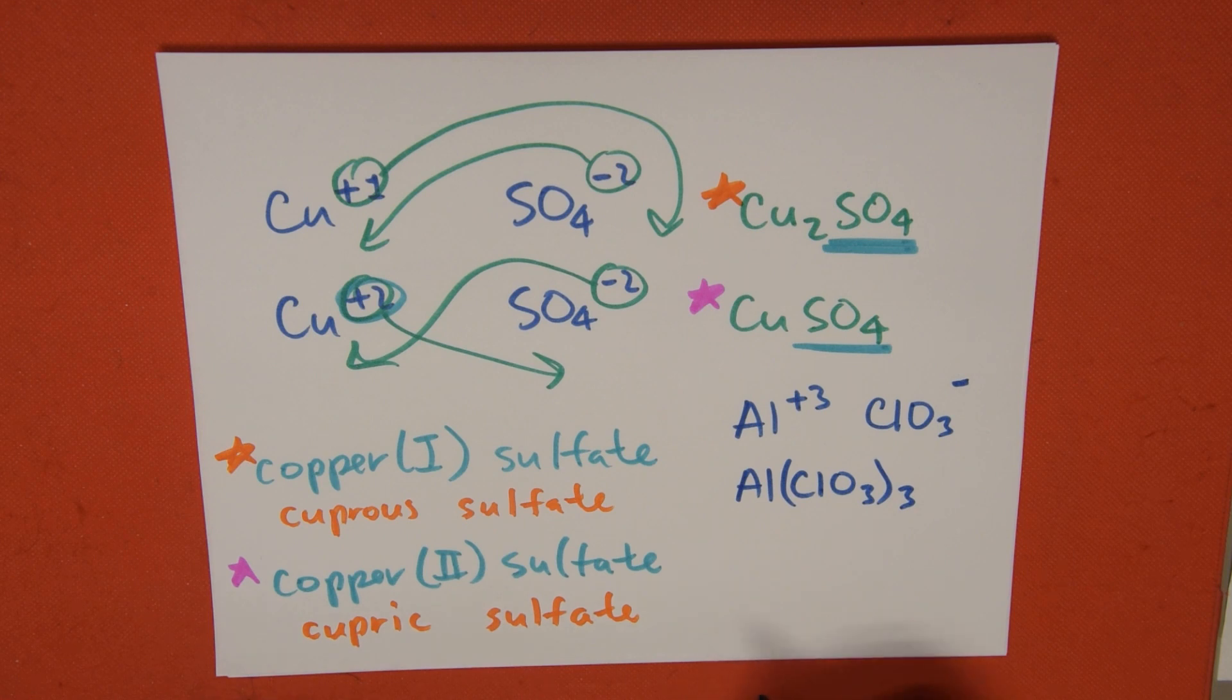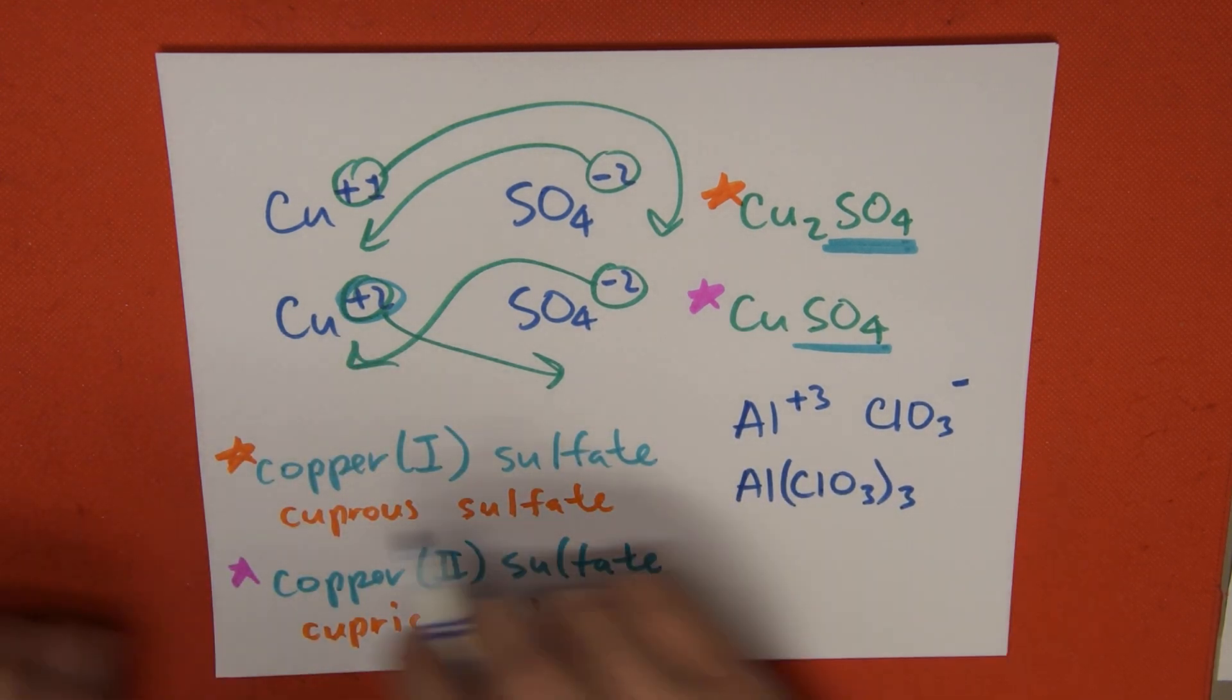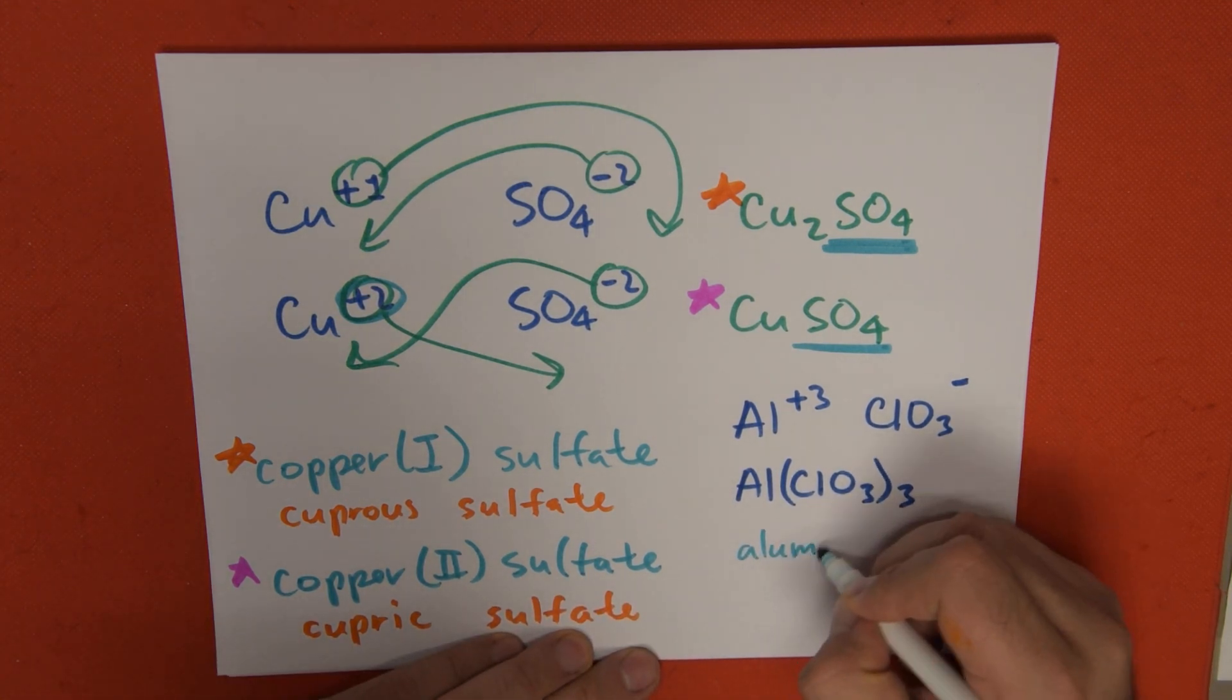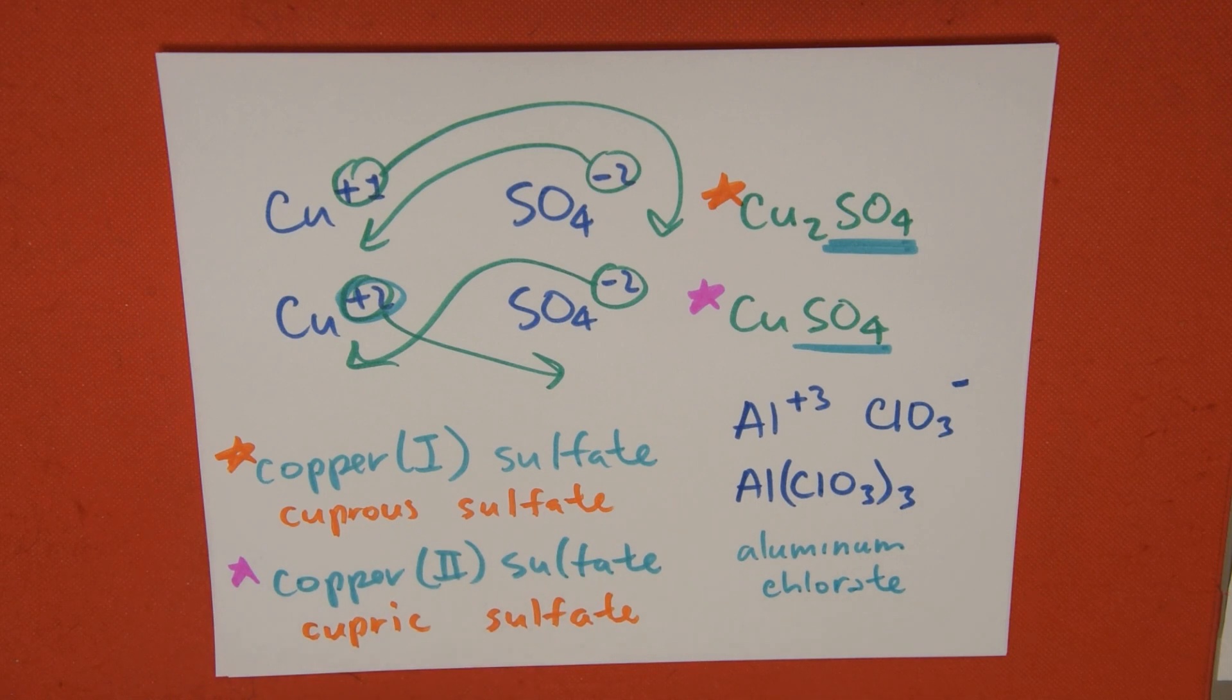And then this compound, since aluminum only has one valence, it's going to be called, it only has a modern name, which is aluminum, and the name of the oxyanion that we use is chlorate. Aluminum chlorate. Check out on the internet for some exercises on naming oxysalts. I hope this video was helpful.